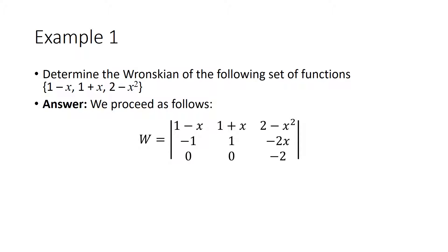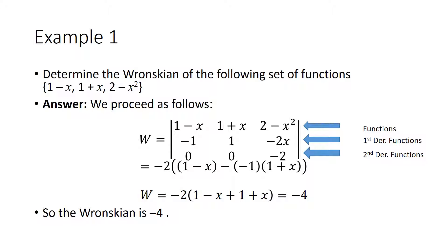Here we have set up the Wronskian determinant where we can see the functions are in the first row of our matrix. The first derivative functions are in the second row of the matrix and the second derivative functions occupy the third row of the matrix. We compute this determinant out to be negative 4 after doing all the arithmetic so our Wronskian is negative 4.